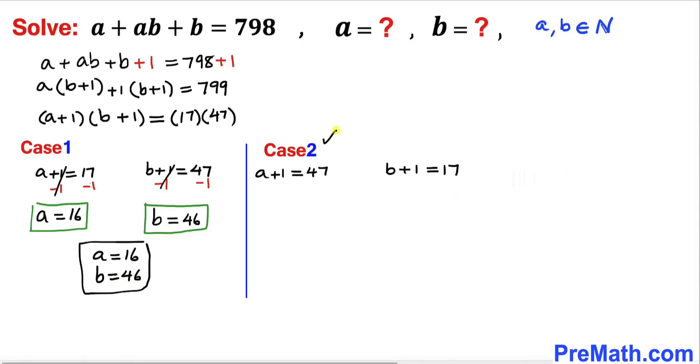Now let's consider case two. Let's subtract one from this equation on both sides, so a turns out to be 46. Our b value turns out to be 16. So the solution for case two turns out to be a equals 46 and b equals 16.